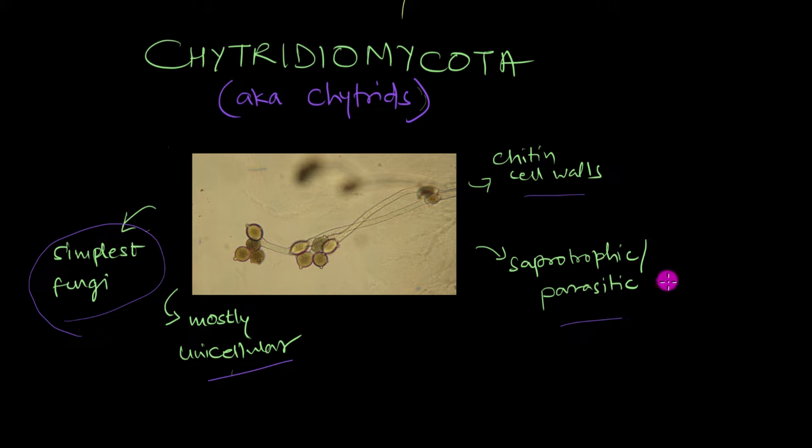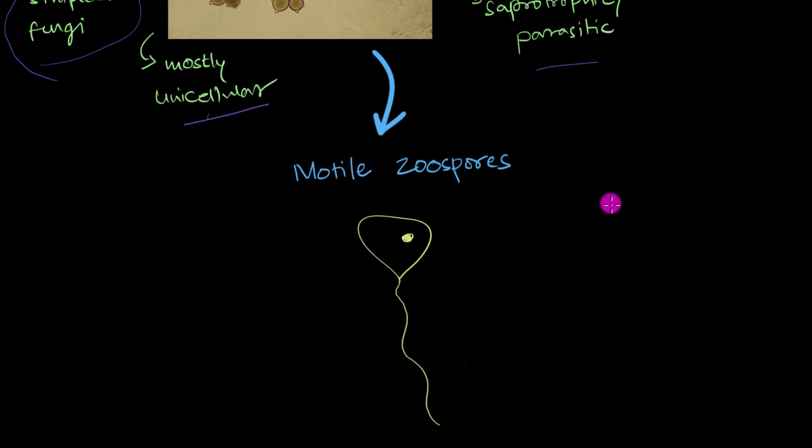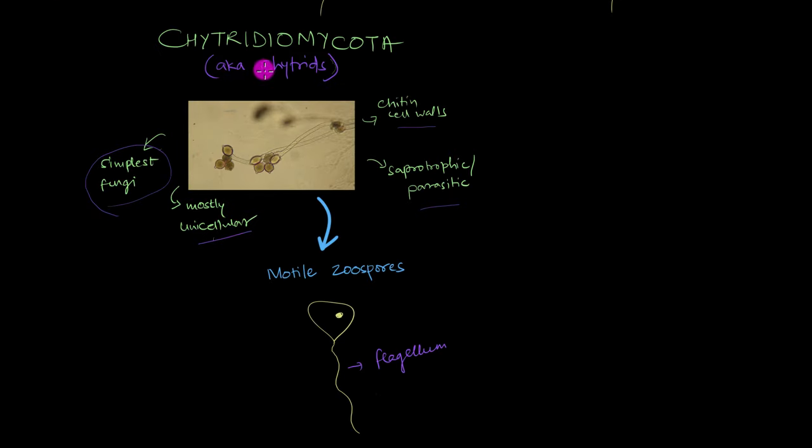However, what truly sets chytrids apart from the rest of the fungi are their motile zoospores. The spores that the chytrids produce are called zoospores, and each of them come equipped with a flagellum like this. And using this flagellum, the zoospore can actively move around or swim around all on their own. And mind you, no other fungal spore can do this. They are the only motile spores to exist, and chytrids are the ones that can produce these spores. A very famous example is this organism right here, which is called Allomyces.